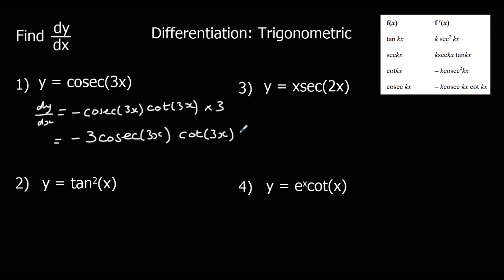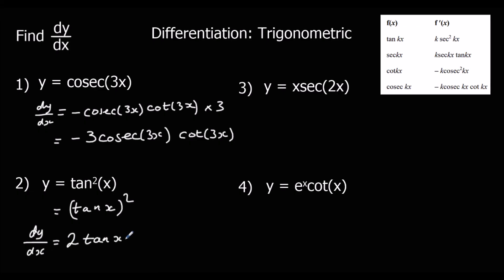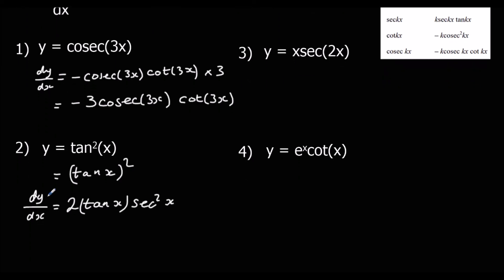Question two: y equals tan squared x, which is the same as (tan x) all squared. Applying the chain rule, dy/dx is 2 tan x, differentiating around the bracket, then times by the bracket differentiated, which is sec squared x — since tan x differentiates to sec squared x. Simplified: 2 tan x sec squared x.